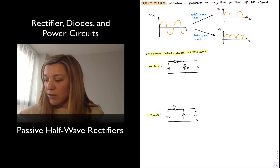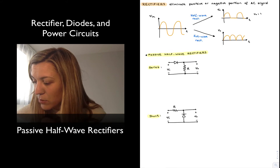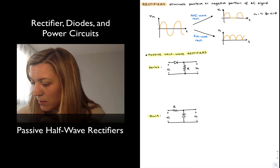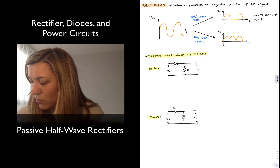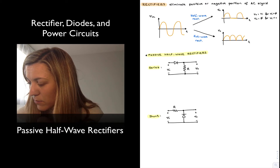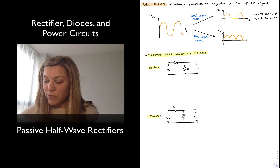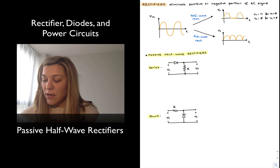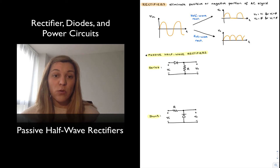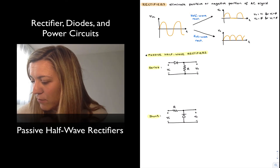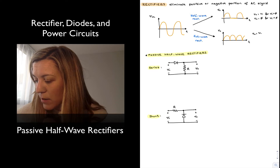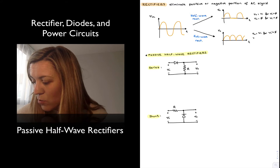So if I wanted to write that mathematically, I would say my output signal is equal to VIN when VIN is greater than or equal to zero, and zero otherwise. In the case of the full-wave rectifier, you can see where the input signal was positive, the output signal follows the input. Where the input signal was negative, the output signal becomes positive — equal in magnitude to the original input signal but with reversed polarity. Mathematically, for a full-wave rectifier, my output signal is equal to VIN for VIN greater than or equal to zero, or negative VIN for VIN less than zero.